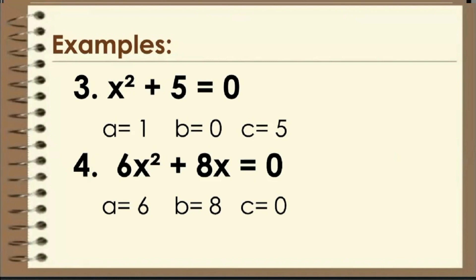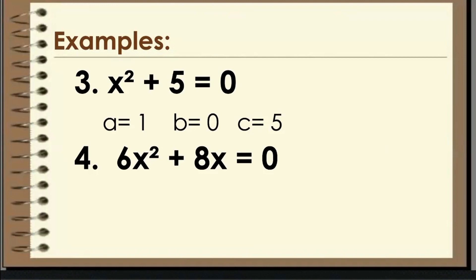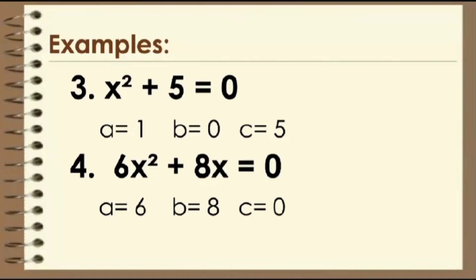Next, we have 6x² + 8x = 0. The value of A in this equation is positive 6, B is equal to positive 8, and C is equal to zero. It is considered a quadratic equation because it has the first term 6x², which makes it quadratic.